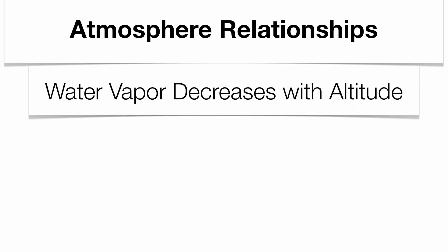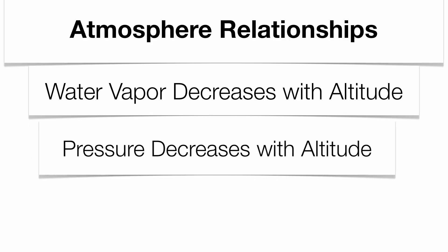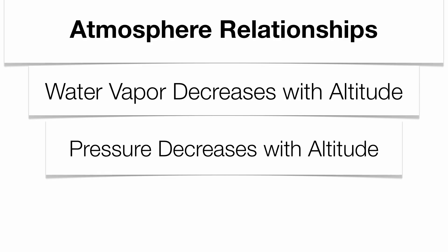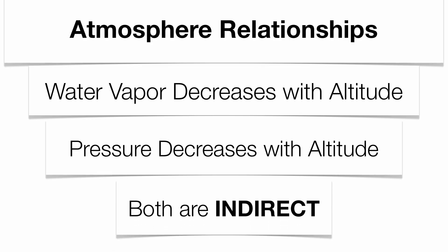There are a couple of atmospheric relationships to know regarding the increase in altitude above the surface. Water vapor is concentrated mostly in the troposphere, so as you increase your altitude, water vapor content decreases. Because the greatest pressure is at sea level in the troposphere, as you increase altitude, pressure decreases as well. Both of those are indirect relationships, and they can be found in your reference table.